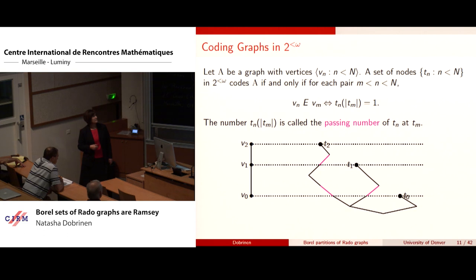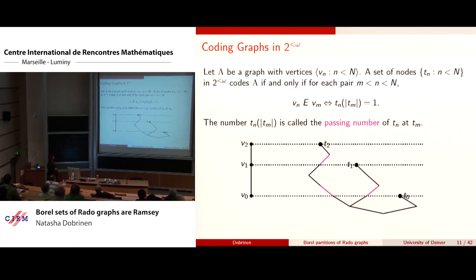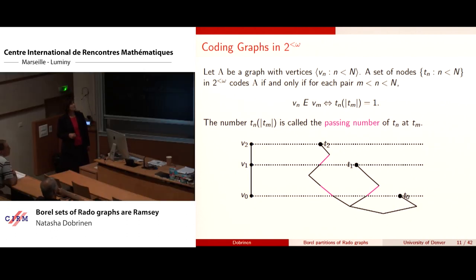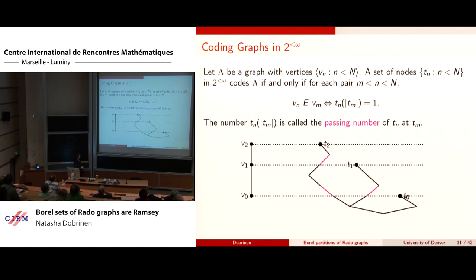If you start with a graph with some linearly ordered vertices, a set of nodes represents this graph: whenever you have a pair m and n, there's an edge between v_n and v_m if and only if t_n on input length of t_m is 1. This number is called the passing number of t_n at t_m. In the diagram, if a node passes by another node with a 1, it codes an edge; if it passes with a 0, it codes no edge. These maximal nodes in the tree code this path.